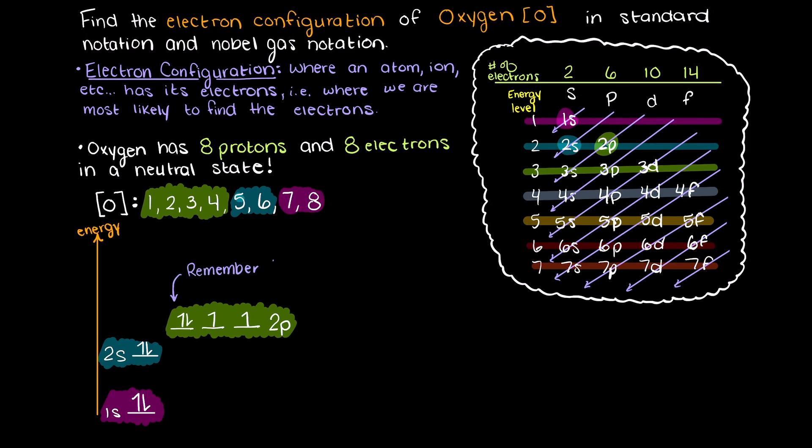Now just remember Hund's rule, which states that each electron will occupy their own orbital before spin pairing with another electron. So we will give each orbital its own electron first, and then the last one will spin pair and go with any one of these 2p orbitals as they are all equivalent energy states.